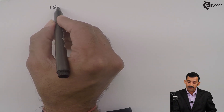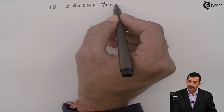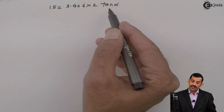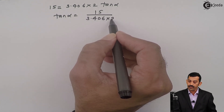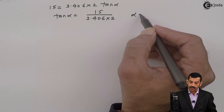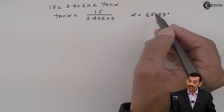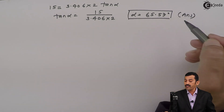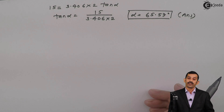From 15 − 3.406 × 2 × tan(alpha) = 0, we get tan(alpha) = 15 / (3.406 × 2). Taking the inverse tangent using a calculator, angle alpha comes out to be 65.57 degrees. This is the inclination at which the ball must be thrown so that it strikes the wall at maximum height.